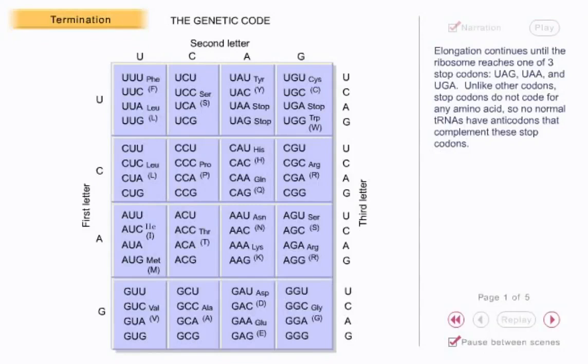Elongation continues until the ribosome reaches one of three stop codons: UAG, UAA, and UGA.